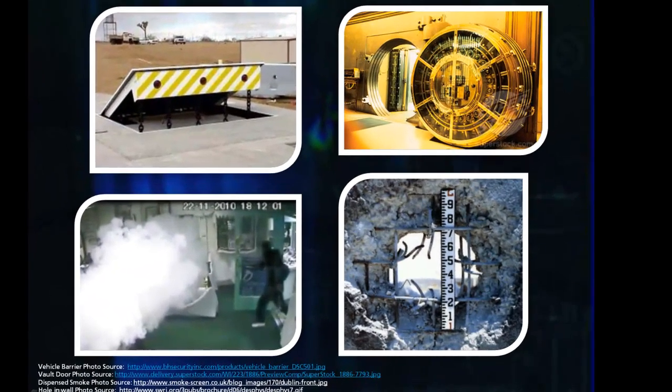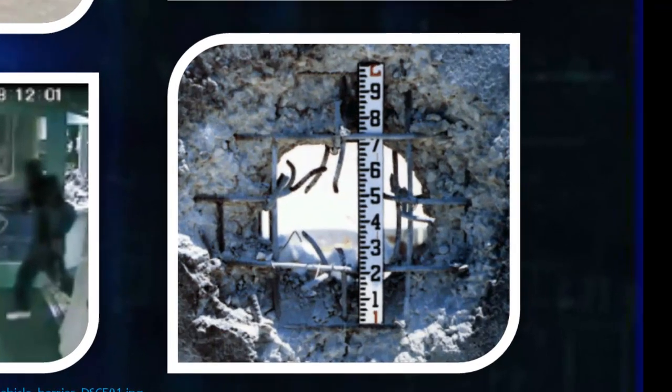The bottom right picture shows an explosive breach test on a concrete wall with mesh reinforcement. When analyzing an adversary path, entry routes other than doors and windows must be considered. With walls, it is important to keep in mind that the adversary only needs to produce a hole big enough for a person to crawl through. Explosives can provide a fast means of breaching barriers and must be taken into consideration when evaluating the security system.